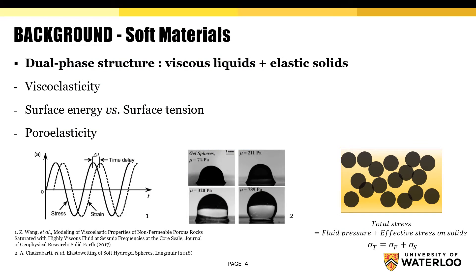Soft materials have distinctive structures compared to ordinary rigid solids. As they have less elasticity, there is a higher probability that they have a two-phase structure composed of viscous liquids and elastic solids. There might be some time difference between the applied stress and the resultant strain, which is called viscoelasticity. The role of surface tension might be predominant in the system because of viscous liquids. And the total stress might be the sum of the fluid pressure and effective stress on solids, which is called poroelasticity. These kinds of features are not found in ordinary rigid materials.